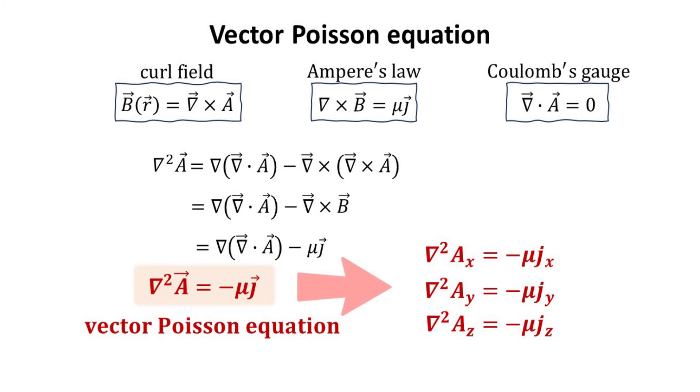However, the vector Poisson equation for magnetic case has three equations, one for each component of the vector potential A.